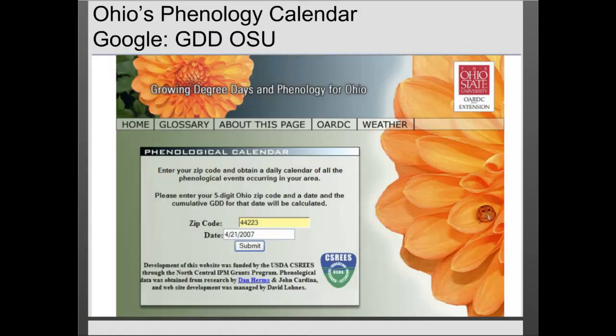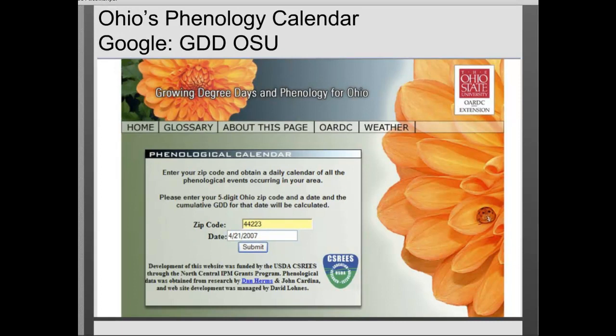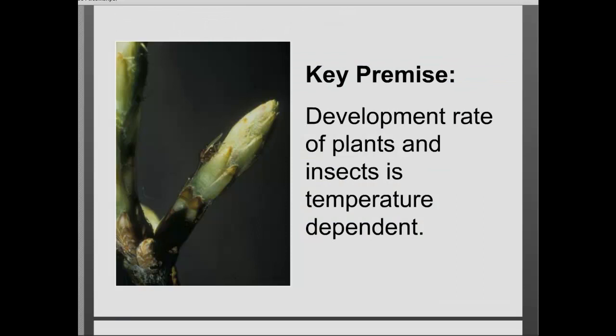Let's look at Ohio's phenology calendar — how it was developed, how we use it in Ohio, and how you can adapt it for use where you are. We're going to spend some time talking about degree days, which may or may not be a new concept for you, and talk about how degree days are calculated and used on our calendar. The key premise of the work we do at Ohio State is that the development rate of plants and insects are both temperature-dependent.